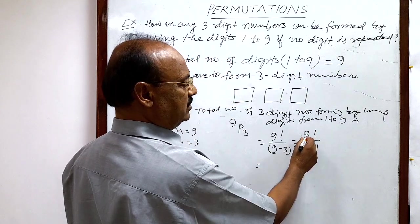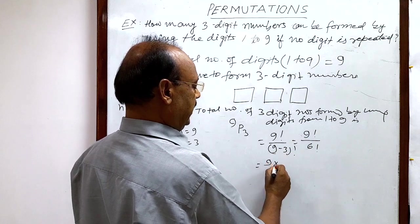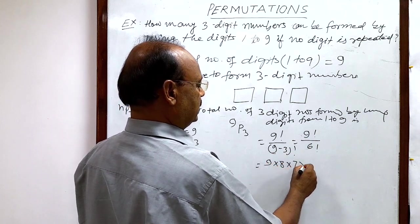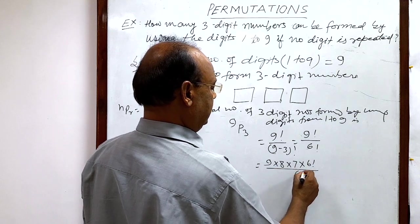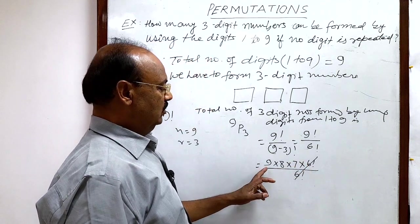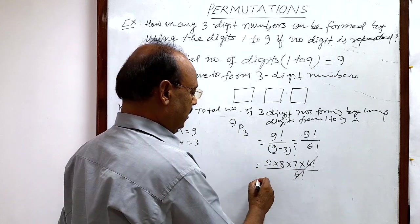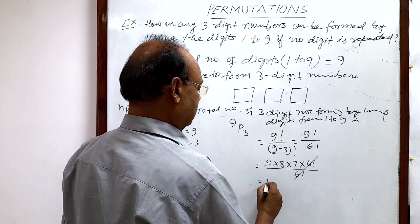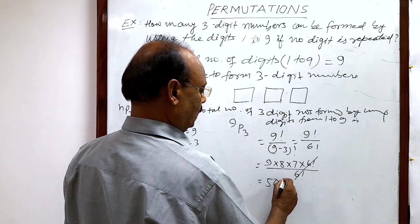Now simplify: 9 factorial can be written as 9 × 8 × 7 × 6 factorial divided by 6 factorial. 6 factorial cancels out, so 9 × 8 × 7 equals 504.